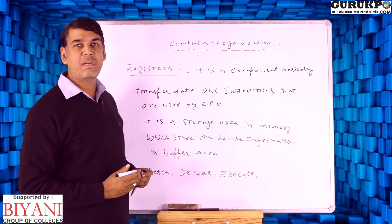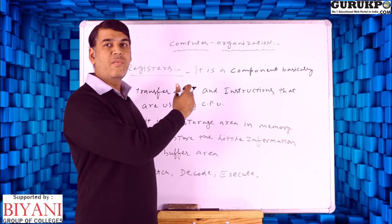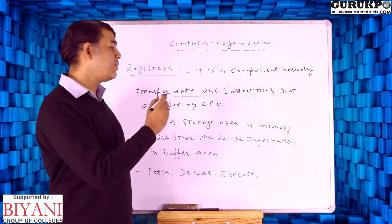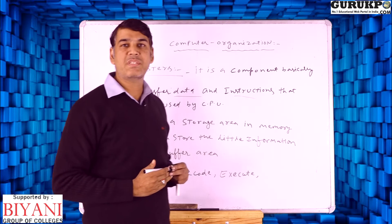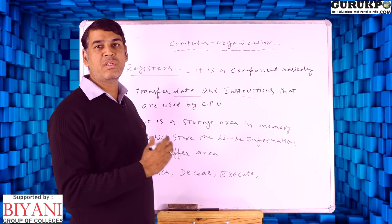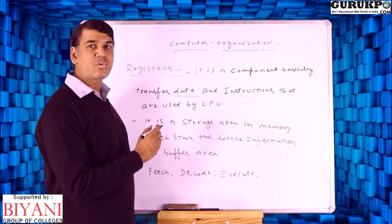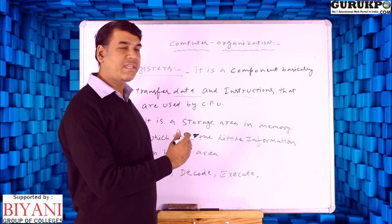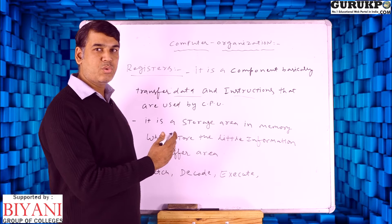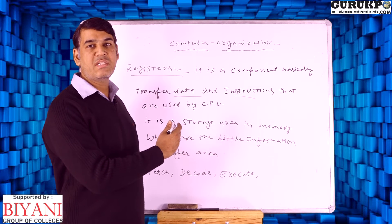First of all, we should know about the register. What is a register? Basically, a register is a component which we use for transferring the data as well as instructions that can be used by the CPU. A central processing unit can execute or transfer the data or information from one component to another component using registers. We can say that it is a storage area which temporarily stores data in a buffer area for a particular time.